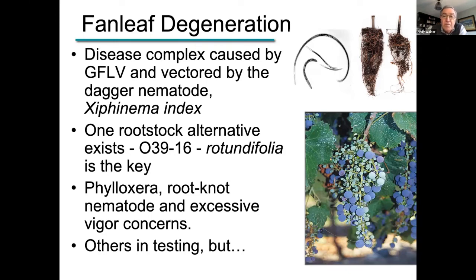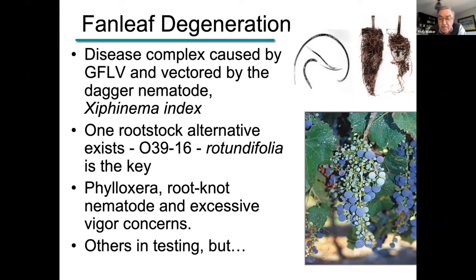The original work on resistance to these viruses in 039-16 was done by Lider and Goheen. I helped as a graduate student evaluate the presence of the virus. Ten years into these trials, there was no virus in the plants. I had verified that, they produced a patent announcement, and the plants were released — and the next year they came down with virus. Very odd, but they never came down with disease. The impact of 039-16 is the compensation for whatever impact occurs on flowering, allowing proper set, proper seed development, and proper berry development.